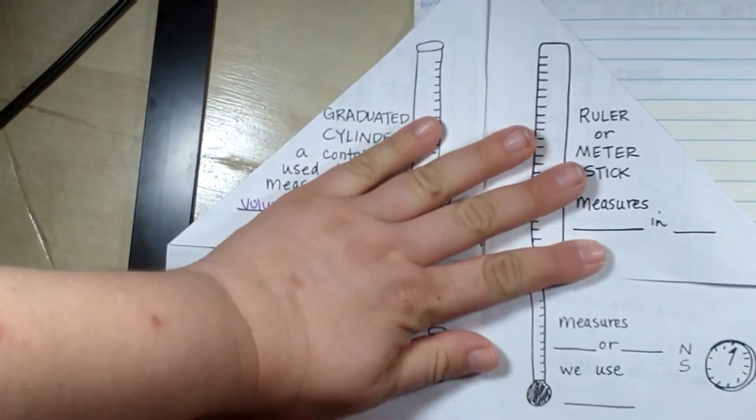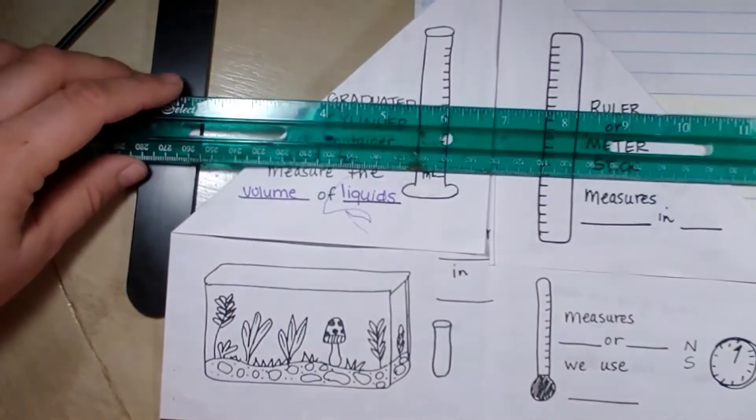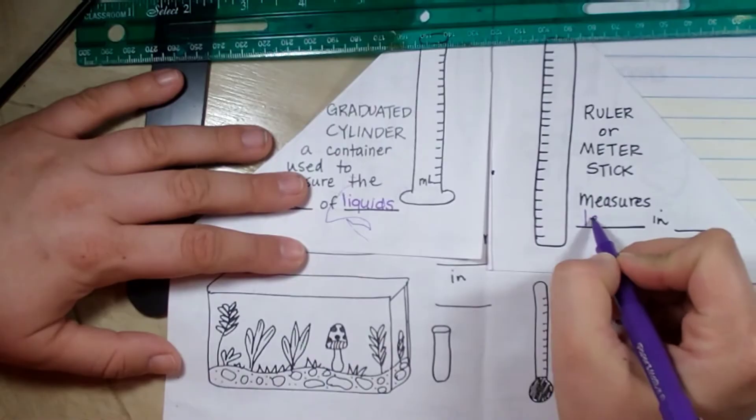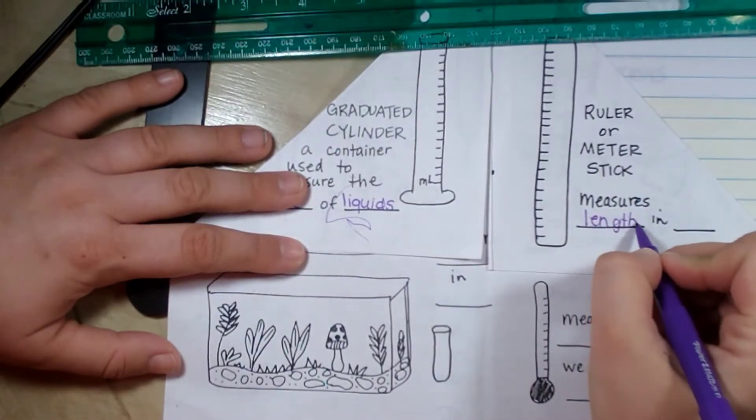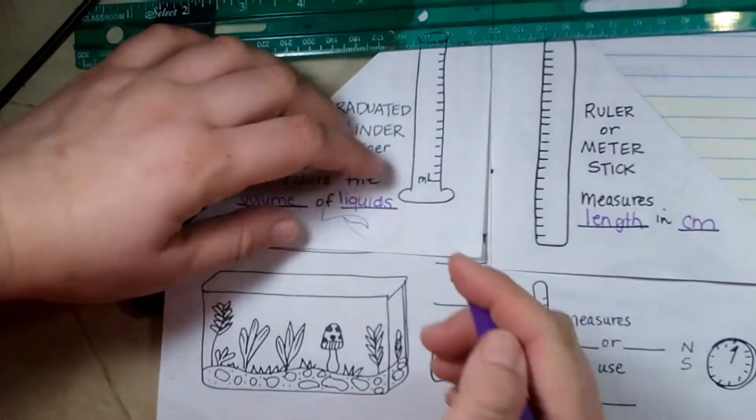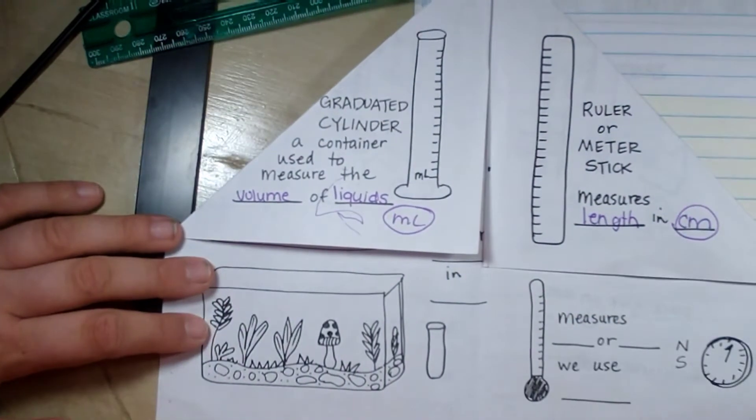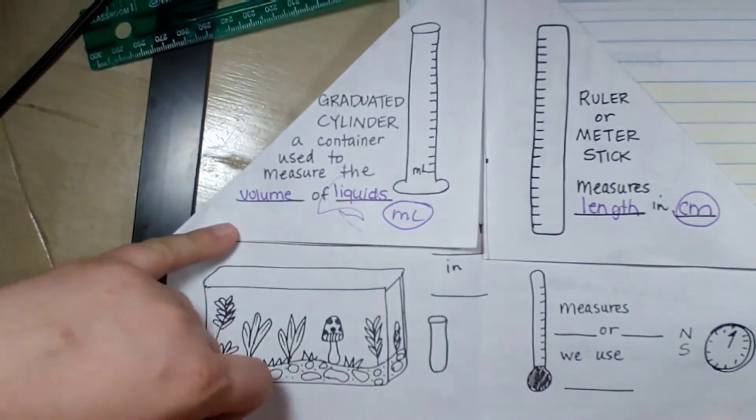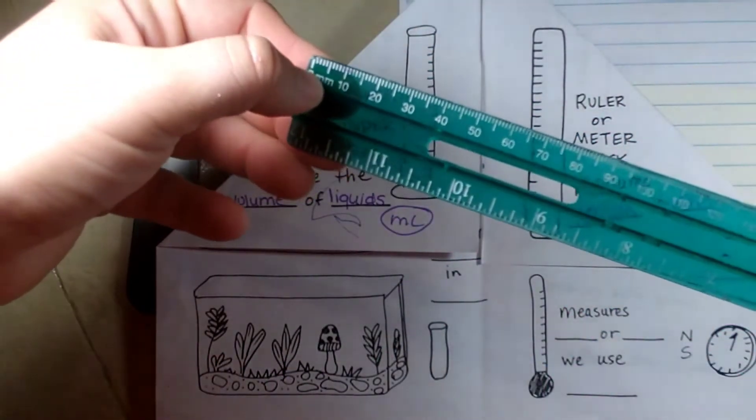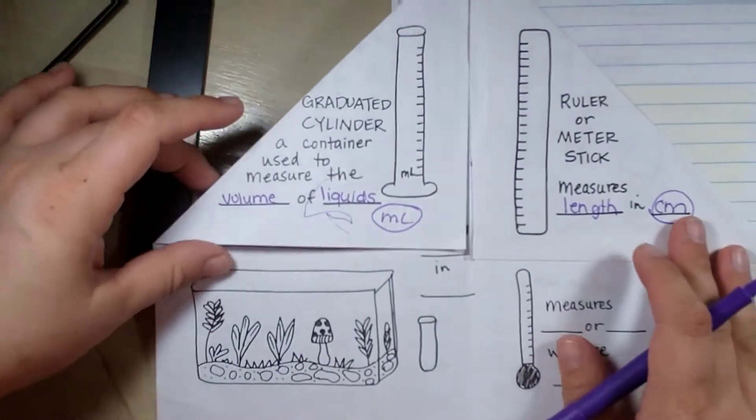Now a ruler or a meter stick, like this right here, or a meter stick is the very long one. A ruler or a meter stick measures length in centimeters. Liquids would be milliliters or liters. That is our metric system. So we don't use ounces. We don't use inches. We use centimeters, which is where this says millimeters. Millimeter is each of the lines.